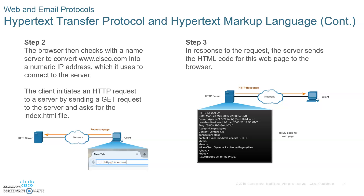Step five: every single web page must have a file called index.html. So every website — eBay, Microsoft, cisco.com — must have their own index.html. The server running the World Wide Web will reply and send the index.html to the client. Step six: the client gives it to the browser, which reads the HTML code and displays it. The DNS helps you get the destination IP address — all you have to type is a name.